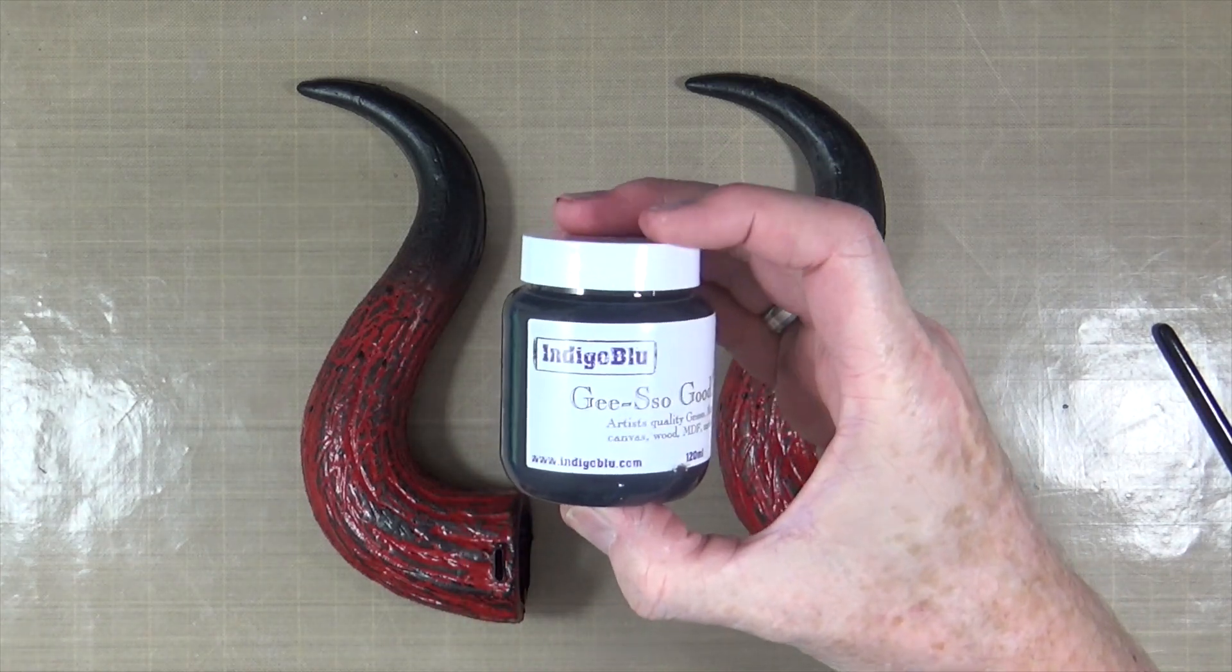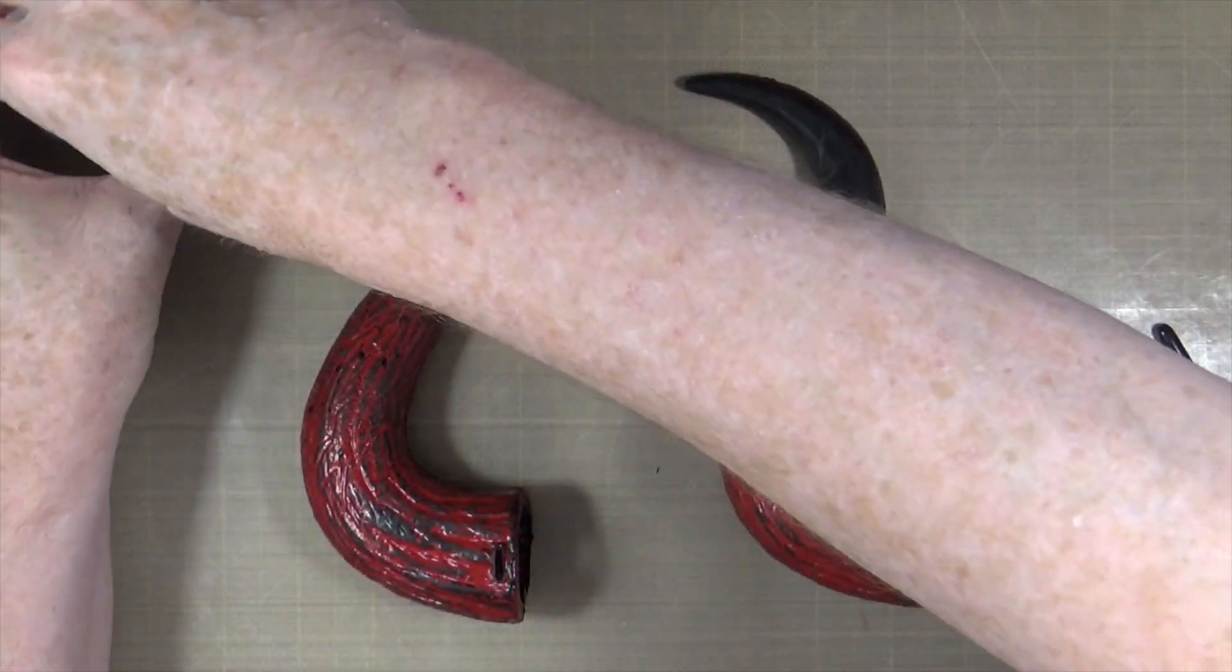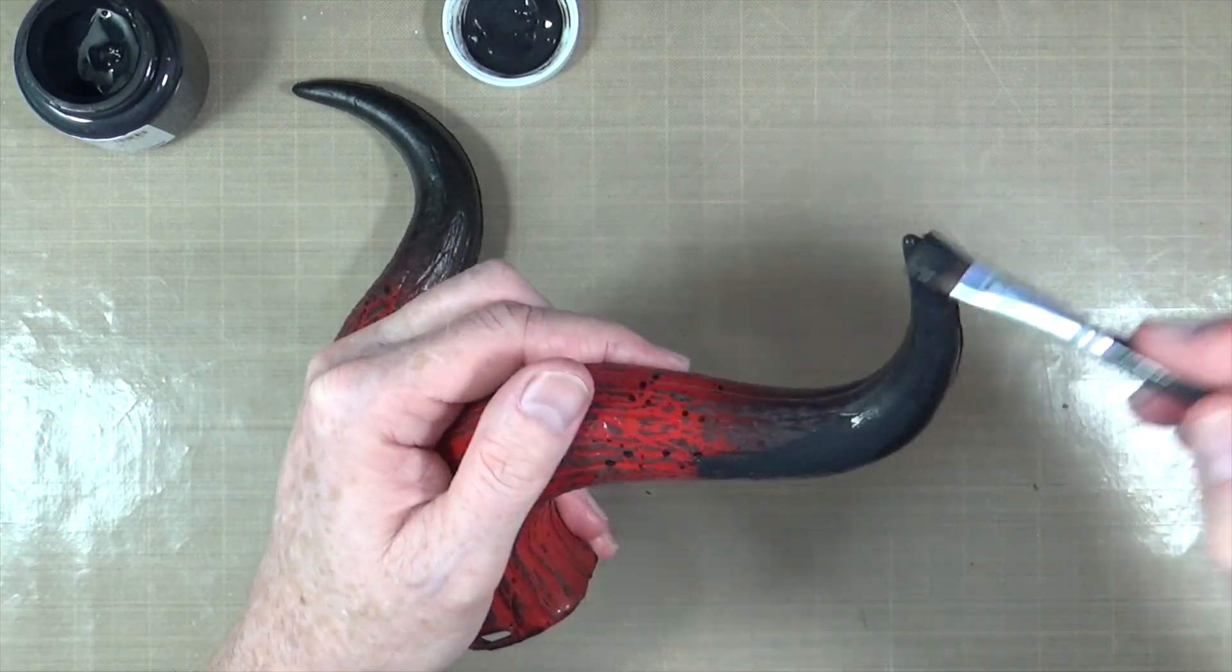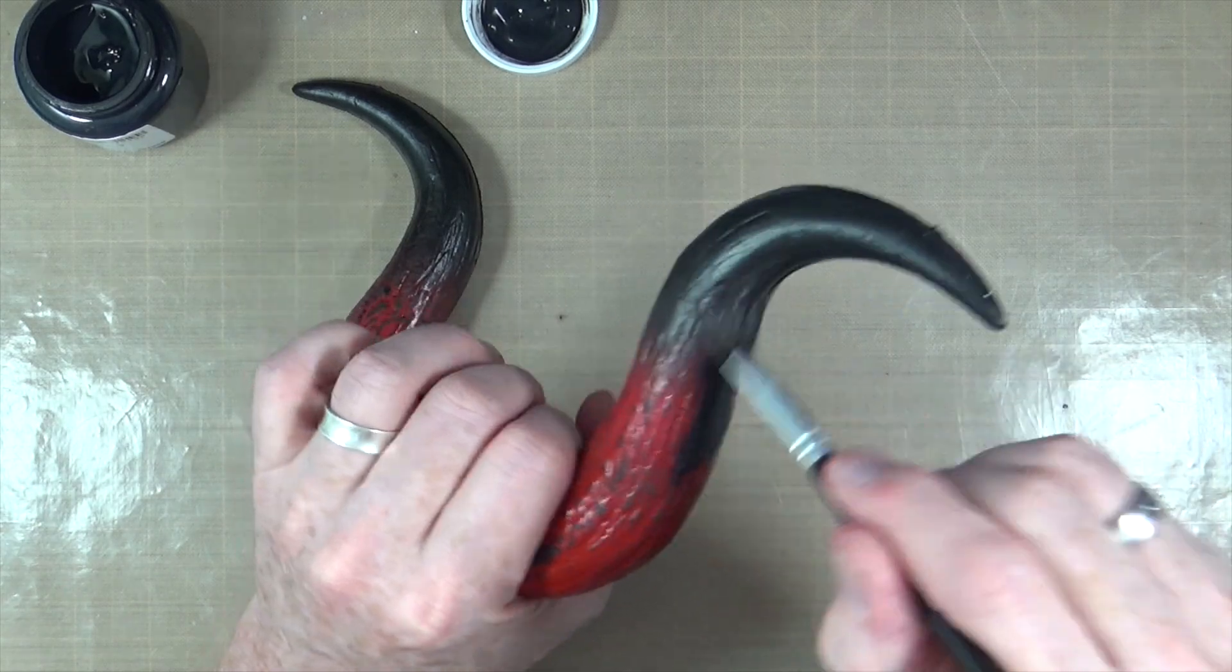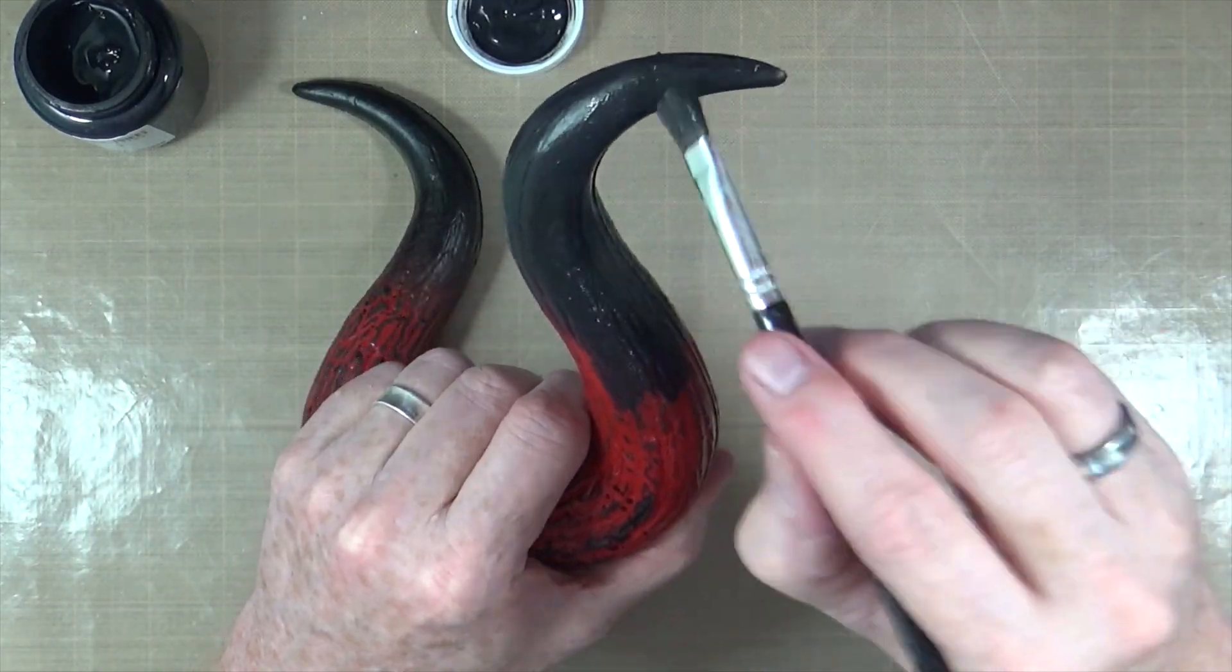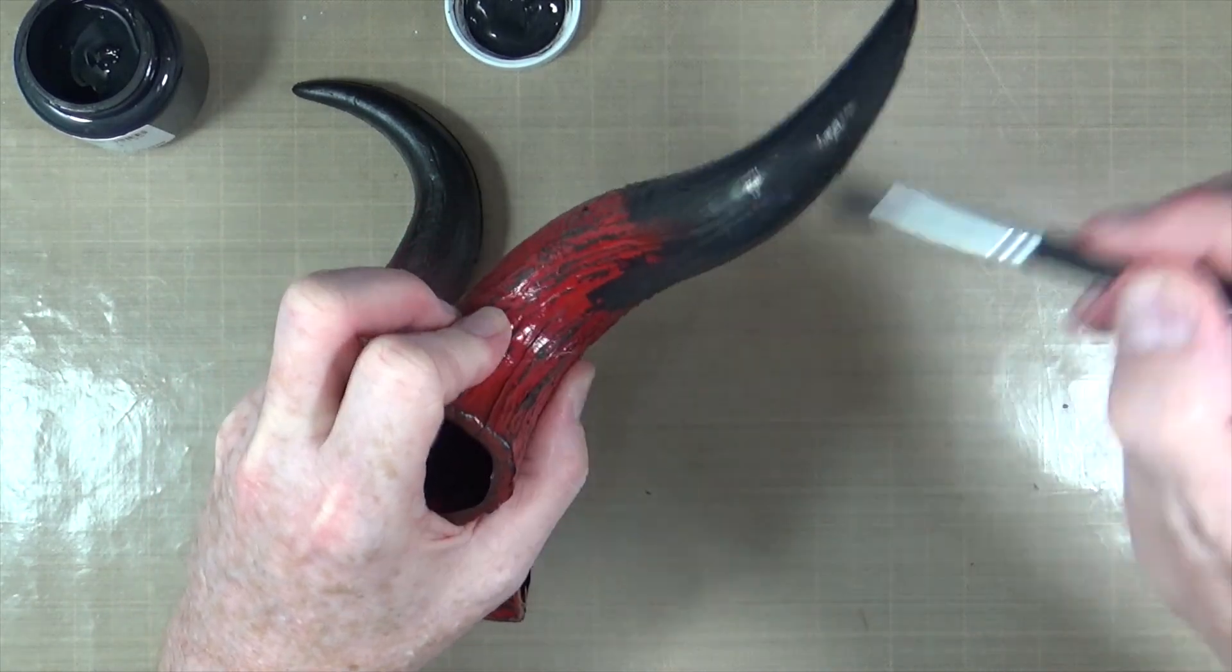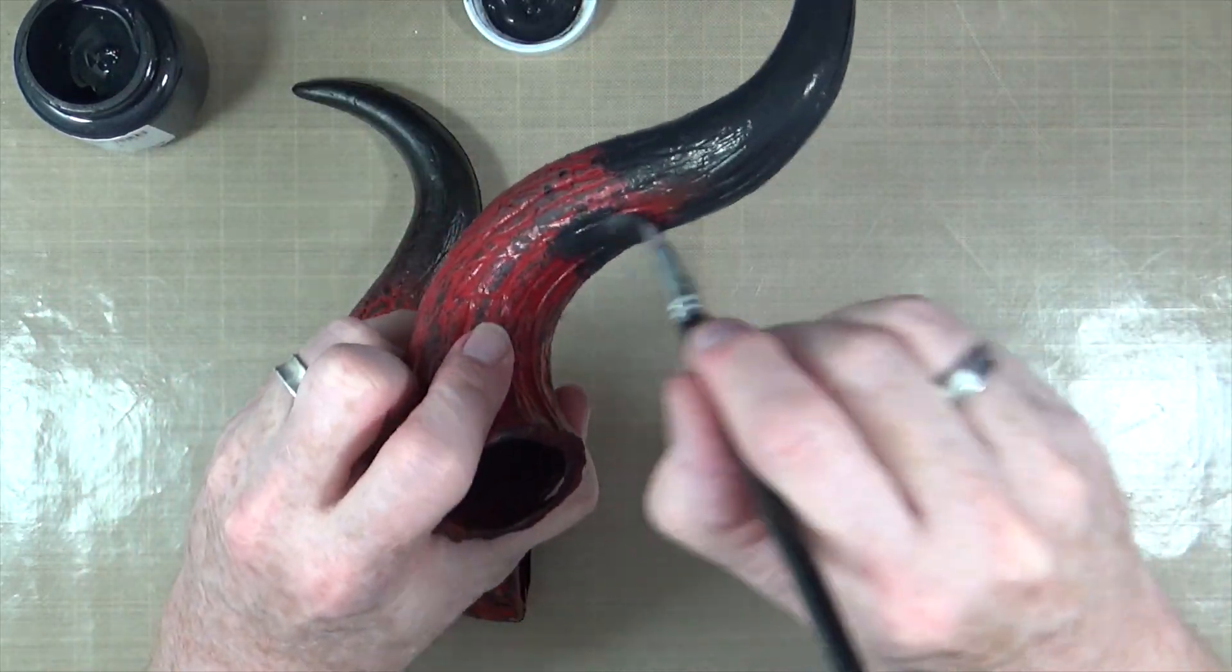You can use the spray and plastic primer that you can buy from the hardware stores, but I don't have any so I'm going to use good old fashioned black gesso. This is from Indigo Blue, other black gessos are available. All I'm going to do is I'm just going to go over the whole thing with the black gesso. Now this will not stop it from getting scratched.